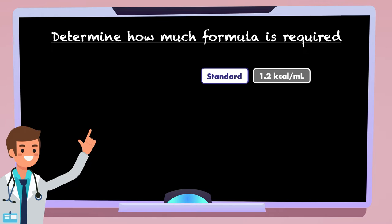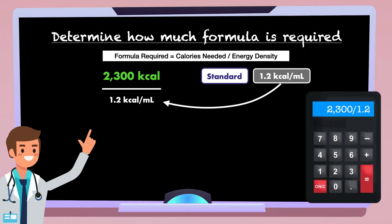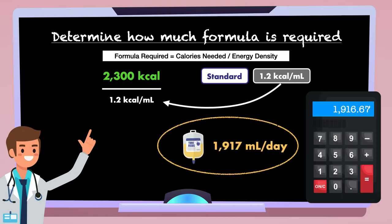Now that we have selected a formula, we can determine how much formula is required to meet the estimated nutritional needs. To do this, we take the total number of calories needed and divide it by the energy density of the formula. At this stage, instead of working with a range of calories, you can pick a single number. I'm going to choose 2300 calories, which is right in the middle of the range we created. 2300 calories divided by 1.2 calories per milliliter leaves us with approximately 1,917 milliliters per day.